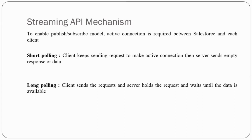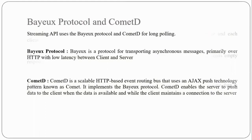To reduce resource usage, we have the long polling concept. In long polling, the client sends a request to the server once, and the server holds that request and waits until the data is available. As soon as the data is available, the server pushes that data and the client receives it. Streaming API uses the Bayeux protocol and CometD connection for long polling. Bayeux is a protocol for transporting asynchronous messages, primarily over HTTP, with low latency between client and server.